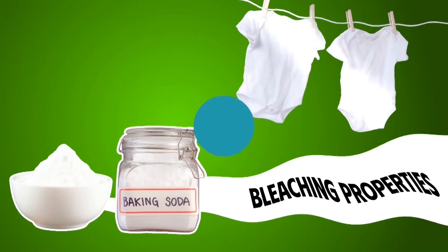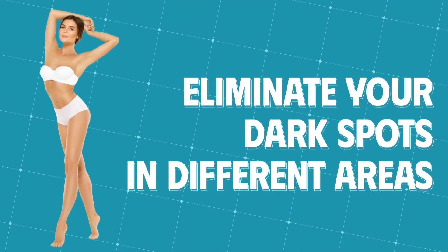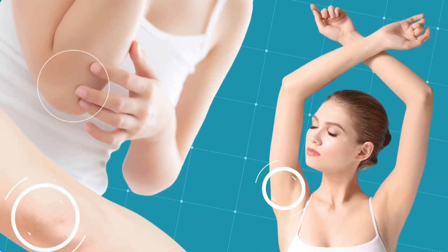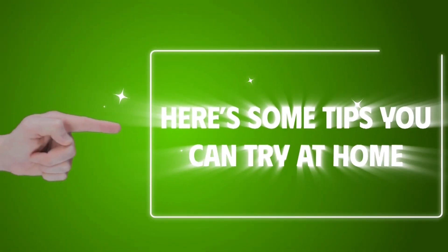As baking soda has bleaching properties, using baking soda properly can eliminate your dark spots in different areas of your body. For example, your armpits, knees, and elbows. Here's some tips you can try at home.